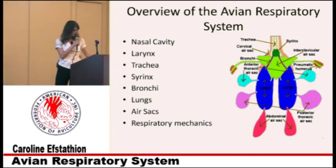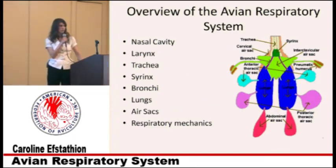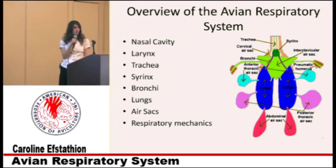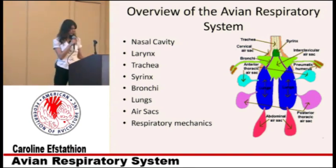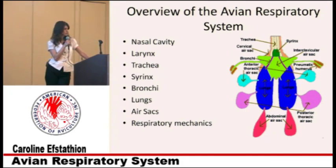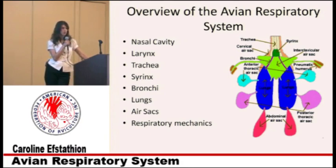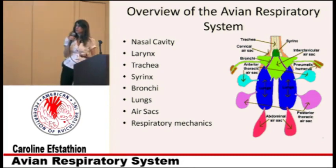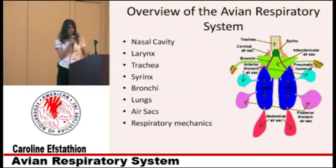We'll go ahead and get started. We're going to begin with the upper respiratory tract and then move down into the lower respiratory tract. Up on the screen I've got a basic diagram of the respiratory system. We're going to go through each basic component — what it is, its main function, and a little about its structure. After that, we're going to compare the bird's respiratory system with mammals, including humans.